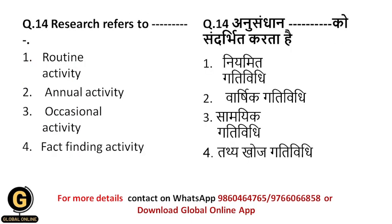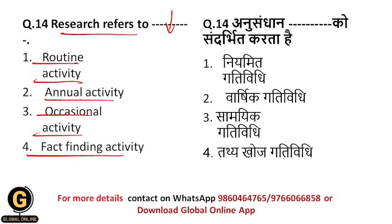Question 14: Research refers to — a routine activity; an annual activity; an occasional activity; or a fact-finding activity. Research is a fact-finding activity, because we need solutions to our problems. As discussed in this session, the main purpose of research is to construct reality — i.e., to construct the fact — i.e., a fact-finding activity. The correct answer is 4: fact-finding activity.